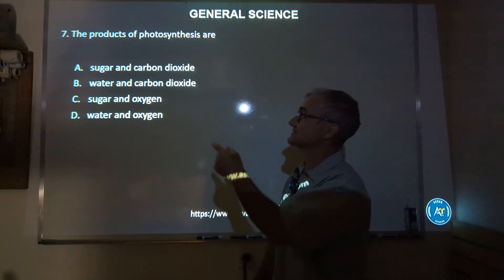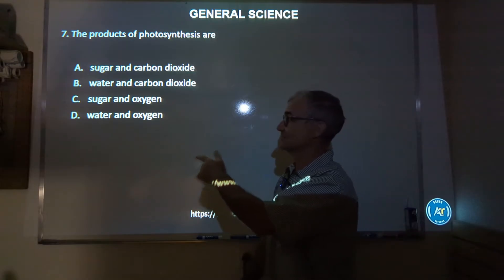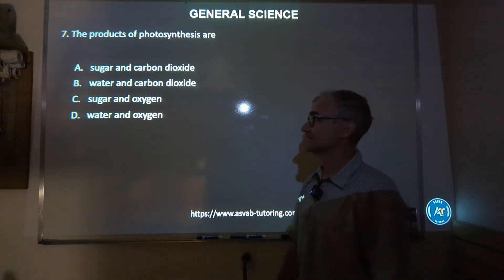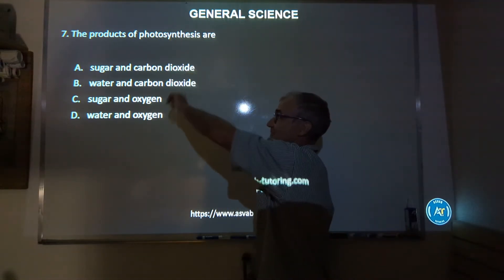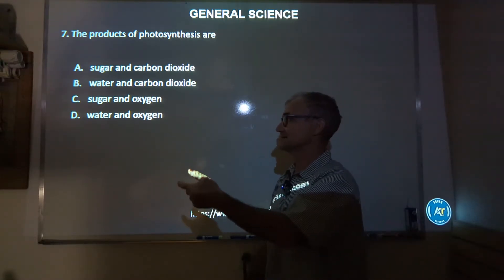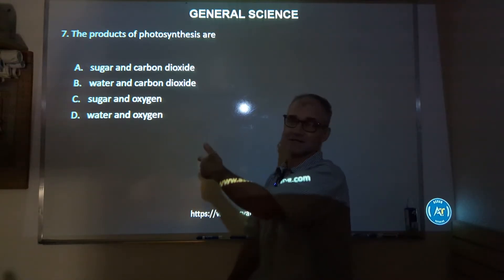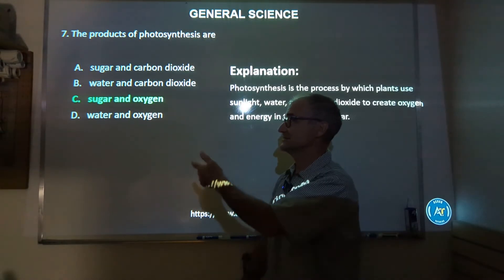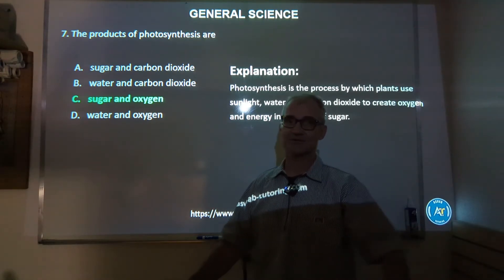Number seven: the products of photosynthesis are sugar and carbon dioxide, water and carbon dioxide, sugar and oxygen, or water and oxygen? You know trees are good, and carbon dioxide is bad, so it can't be A or B. Trees only produce oxygen. Do they produce water and oxygen or sugar and oxygen? Water and oxygen doesn't make much sense because they consume water. So the correct answer has to be C, sugar and oxygen. You can work through those answers through a process of elimination.